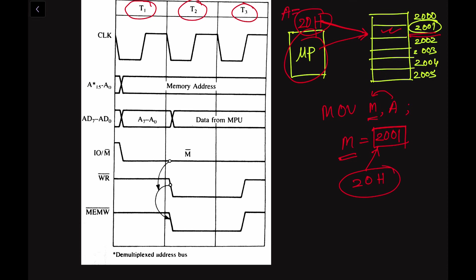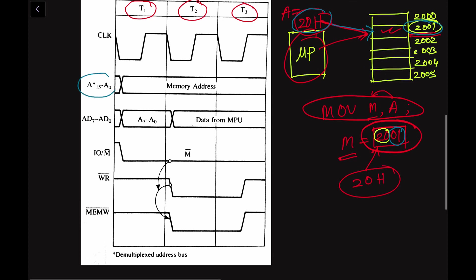For writing data into the memory unit, suppose the accumulator equals 28H and the memory address is 2001H. The higher order memory address is 20H and the lower order is 01H. In the first machine cycle we transfer the memory address to indicate to the memory unit that we want to write data into address 2001H. The program counter provides this address via the address bus, which is a demultiplexed address bus.